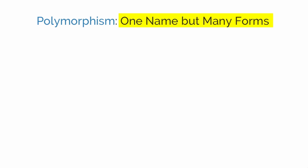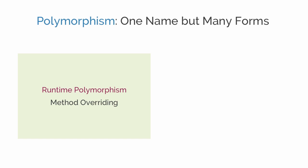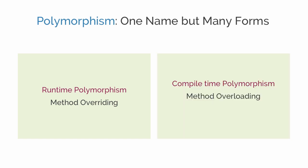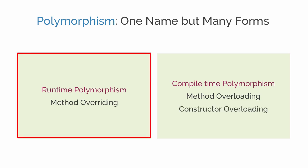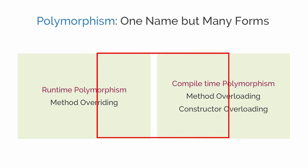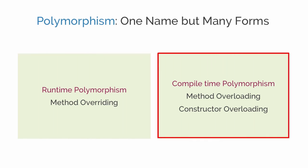There are basically two types of polymorphism in Java. The first one is known as runtime polymorphism and the second one is known as compile time polymorphism. The example of runtime polymorphism is method overriding, and in the case of compile time polymorphism we have method overloading and constructor overloading.